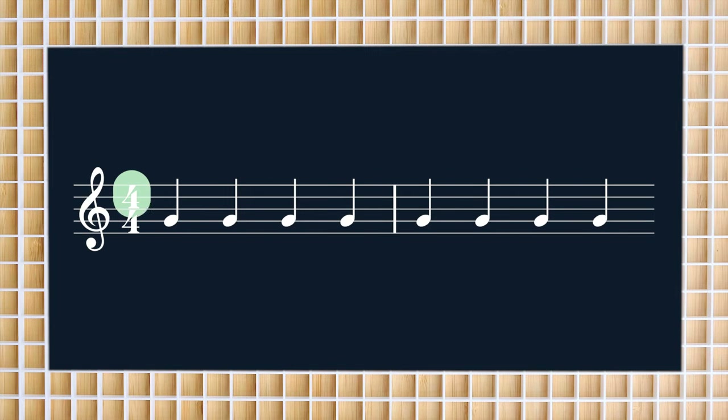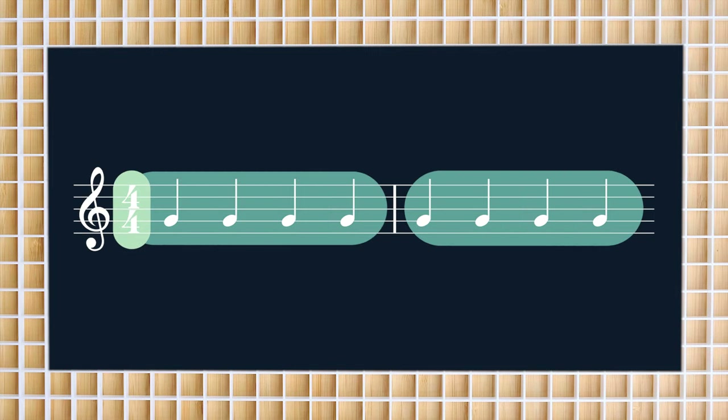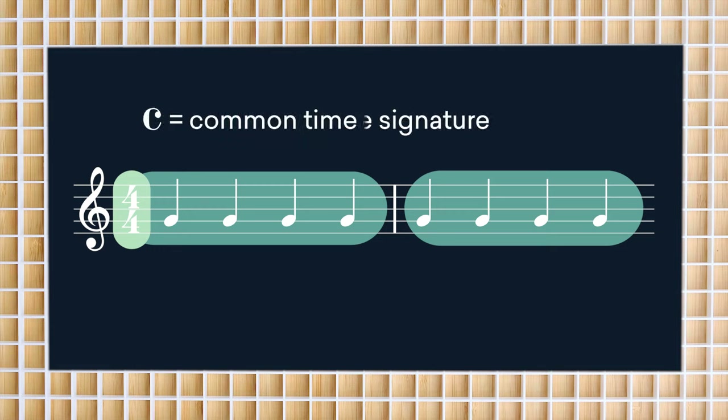There are many ways to organize your beats. The most common way is having four beats per measure. This is called 4-4, or common time. This can also be referred to as the time signature. Here's an example: 1, 2, 3, 4...